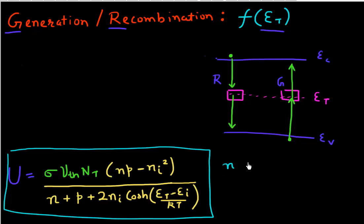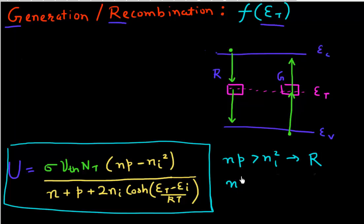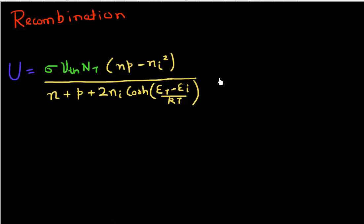When I have excess carriers — that is, when my NP is greater than Ni squared — I get a net positive rate from this formula, and I call that recombination. When NP is less than Ni squared, this term becomes negative, and that's what I call net generation of carriers. So now let's start with recombination first.